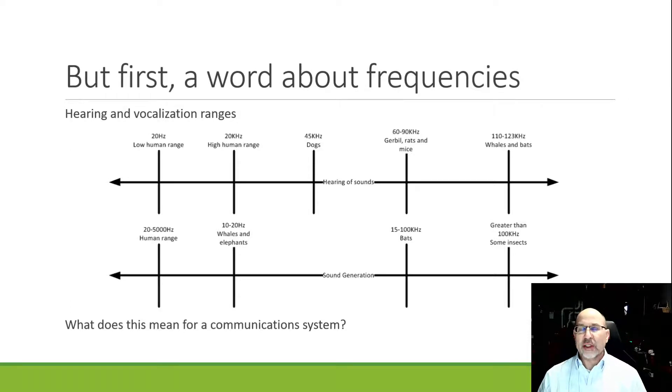On the bottom we have the range of frequencies that we can generate. No matter what kind of baritone you are, there's a limit to how low you can go. I think the world record is somewhere down around 40 or 50 Hertz. And the highest range of frequencies, no matter what kind of soprano you are, is about 5,000 Hertz.